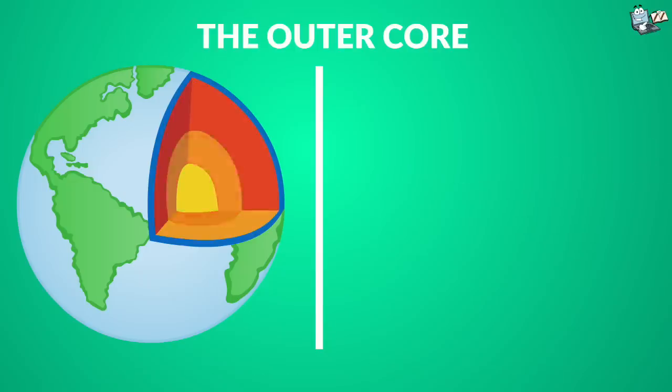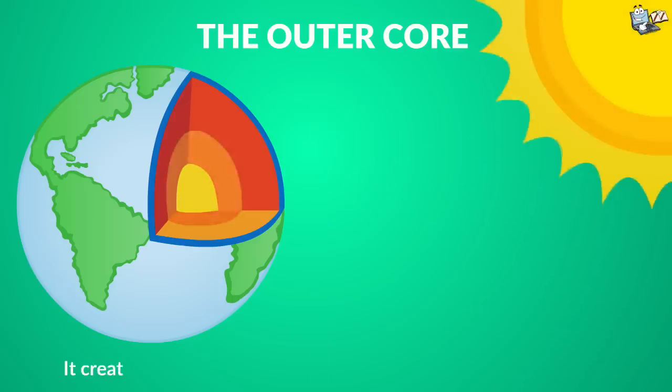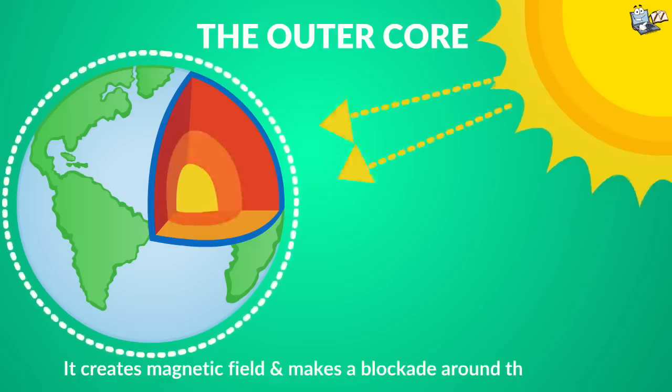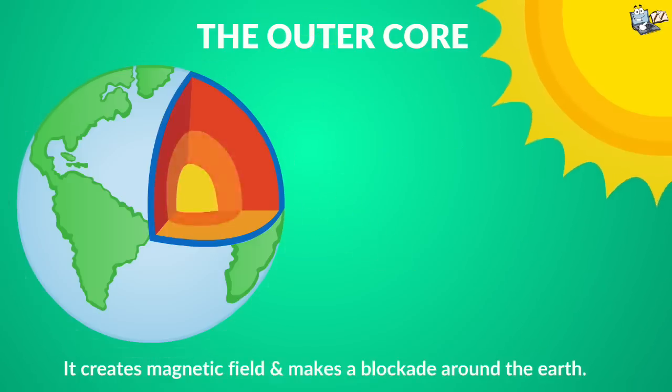The outer core. Earth's outer core is very hot and builds up hot liquid nickel and iron. It creates a magnetic field and makes a protective blockade around the Earth that guards us from the Sun's harmful solar wind.